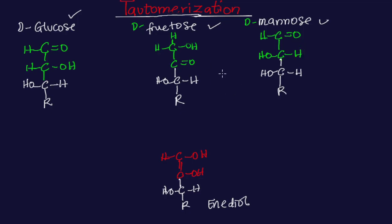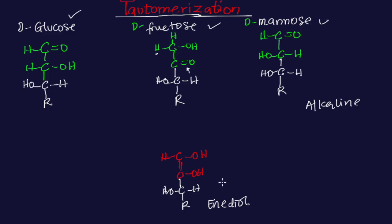One thing about sugars present in alkaline solution is that they are very powerful reducing sugars. They undergo tautomerization — that is, the shifting of a hydrogen atom or a bond — whenever they exchange bonds or hydrogen atoms to form a common product, which is the enediol.